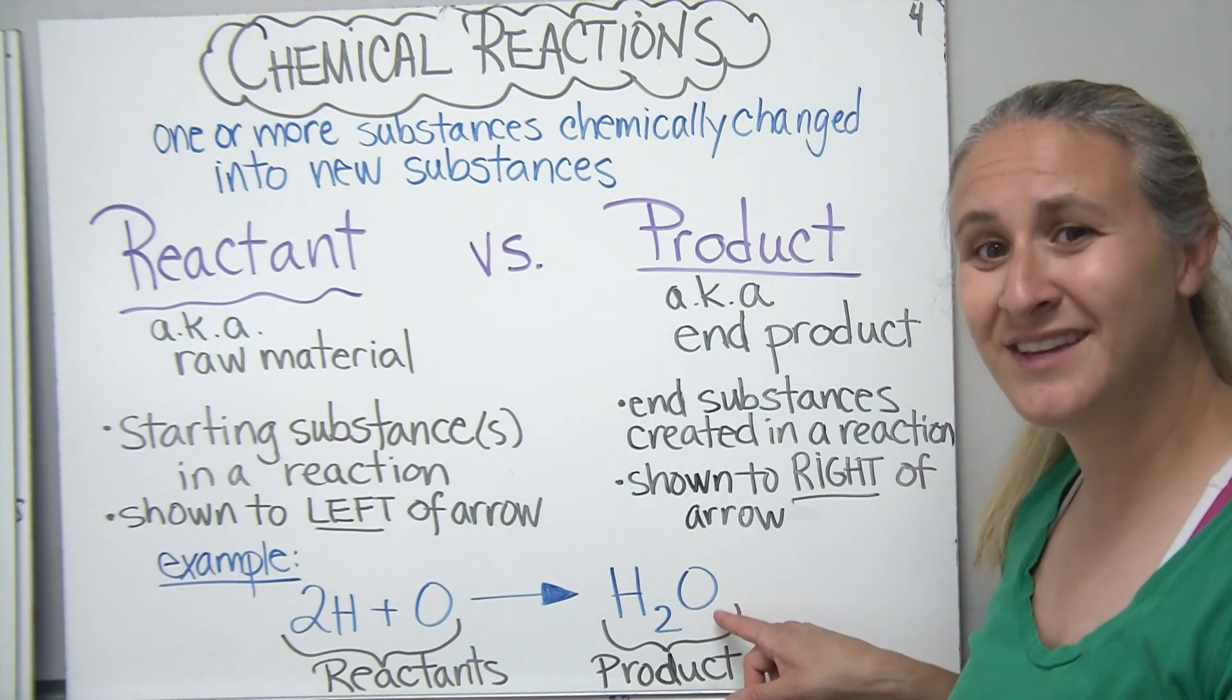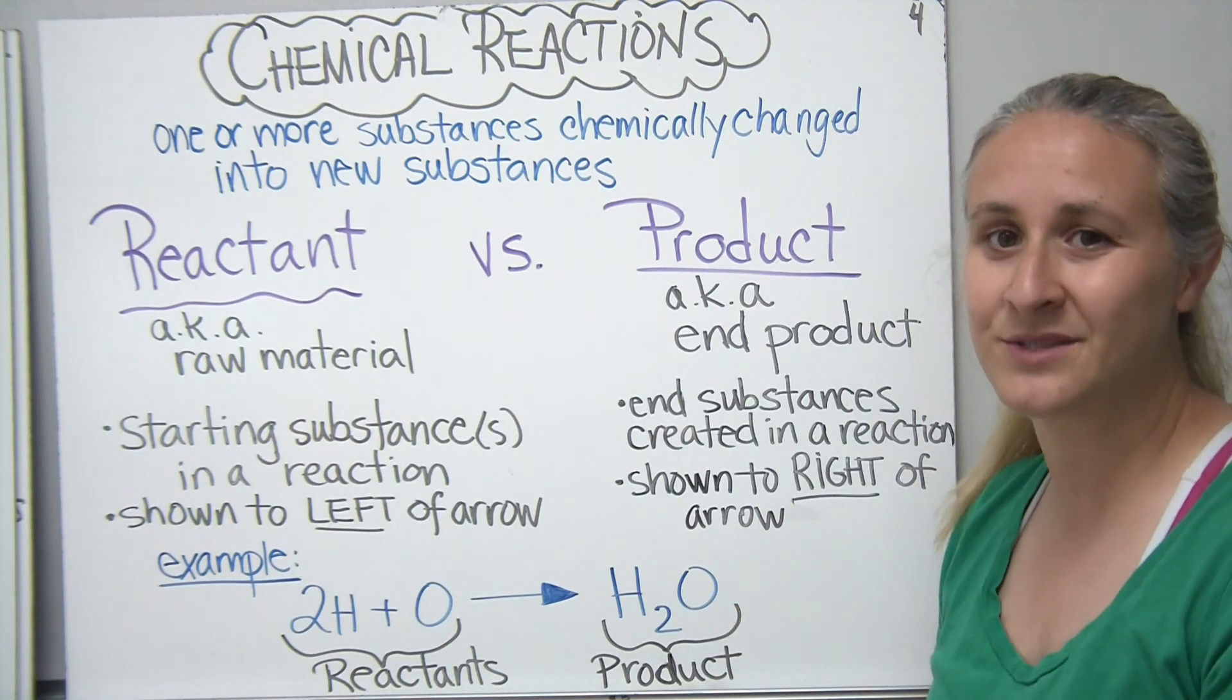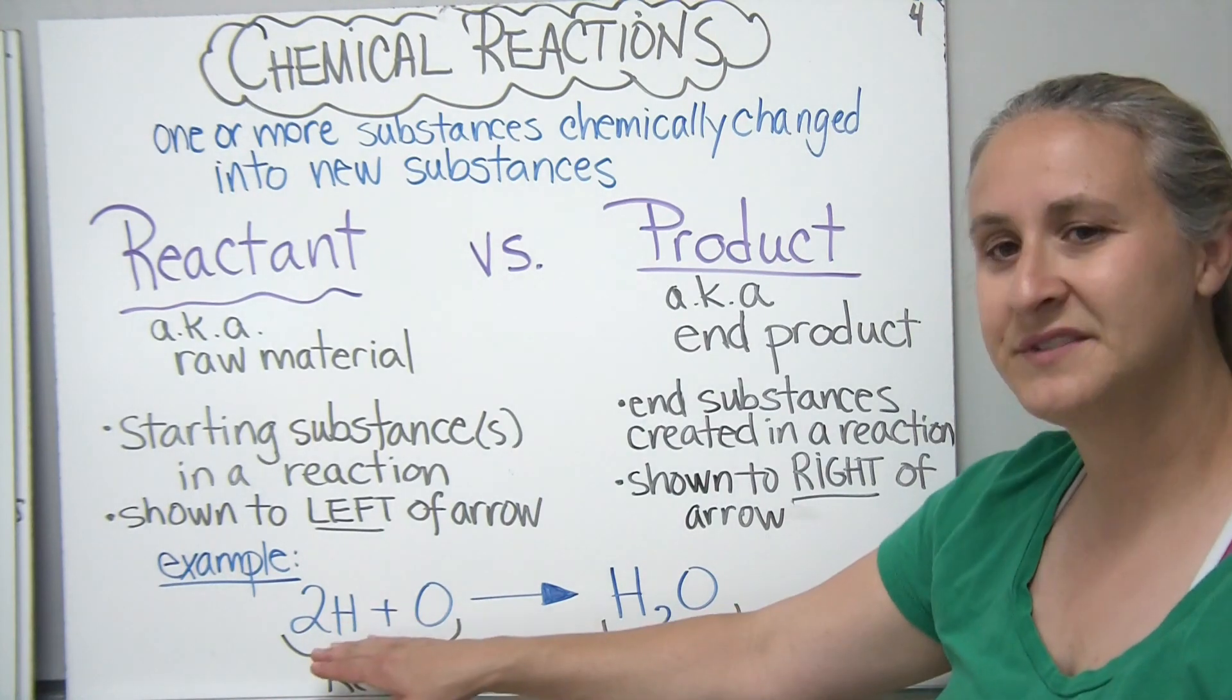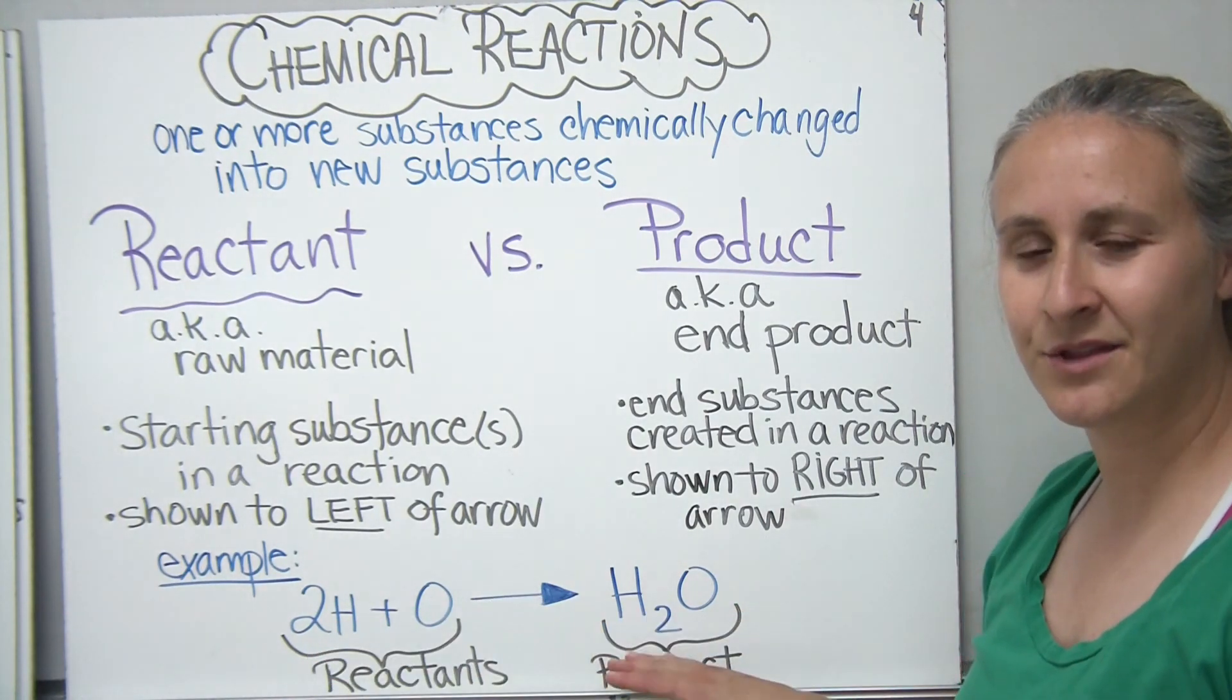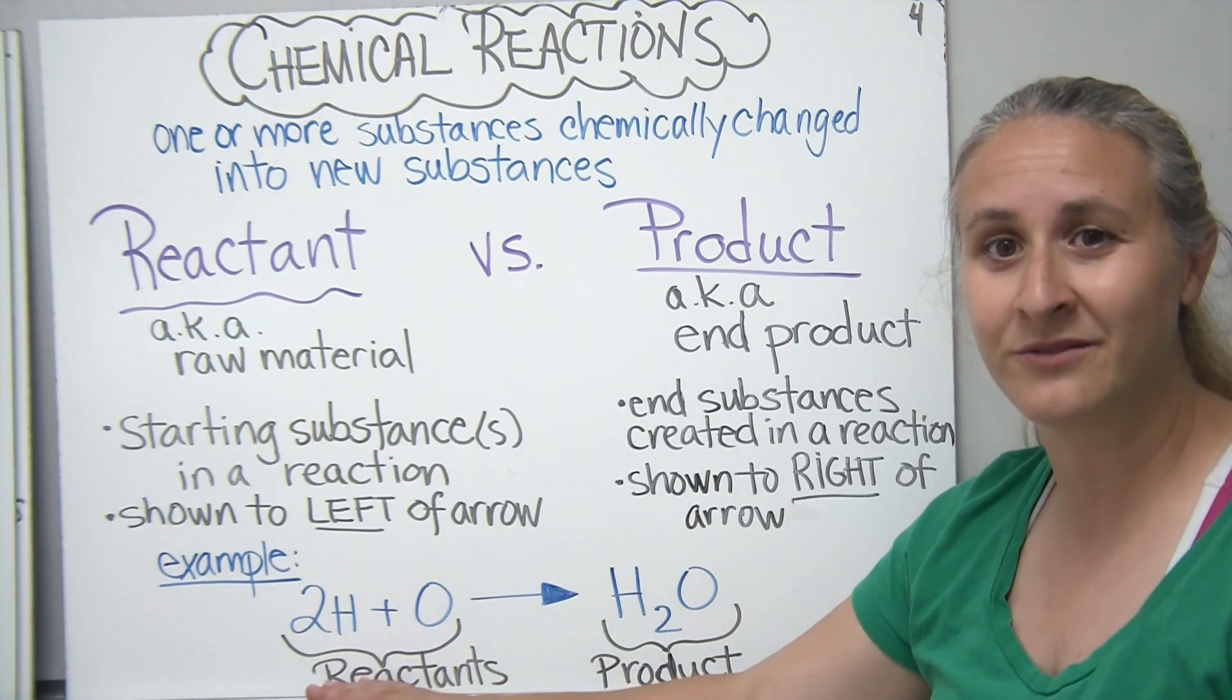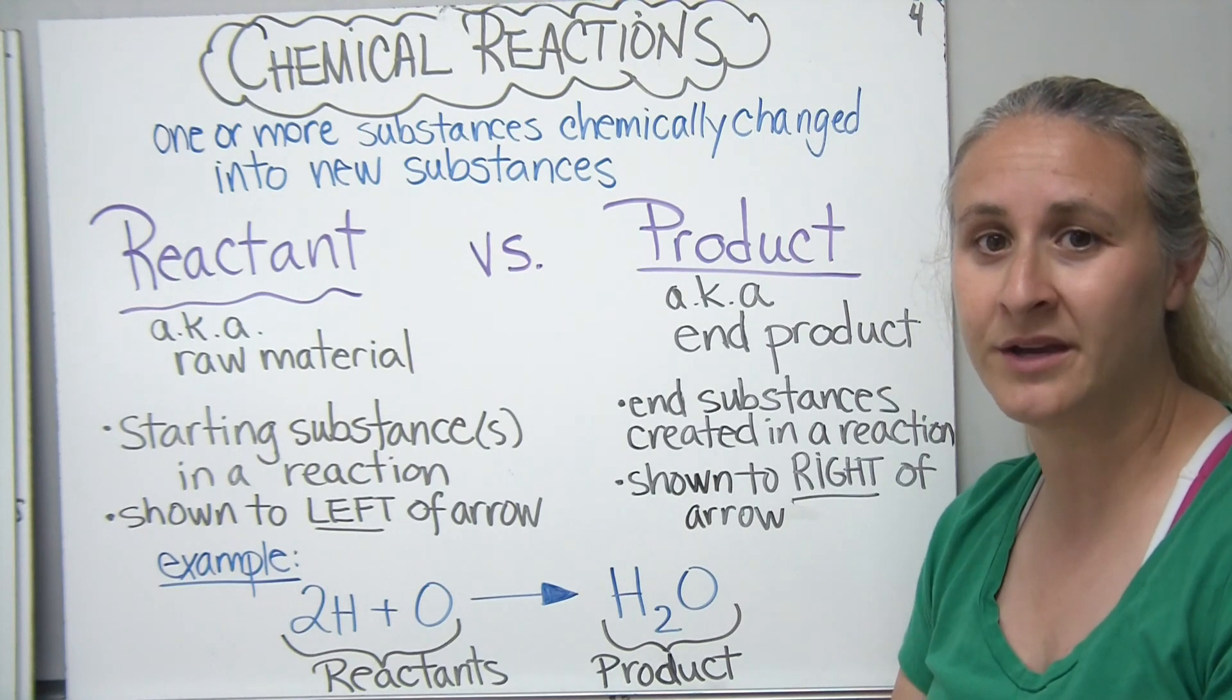And my products, the things at the end of the reaction, in this case, we just have one product, which happens to be water, or H2O. The left of the arrow are the reactants, to the right of the arrow are the products.